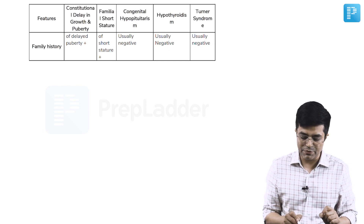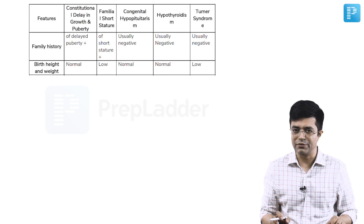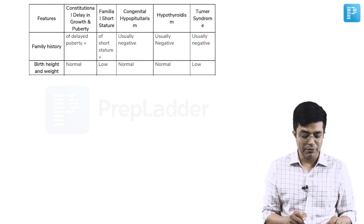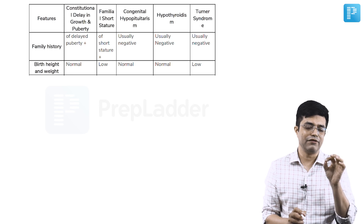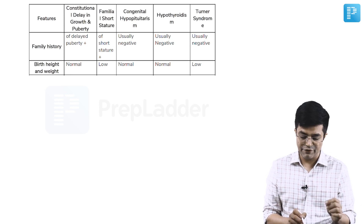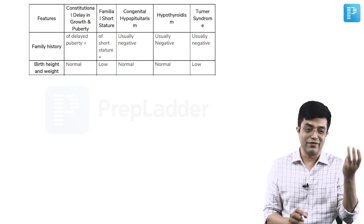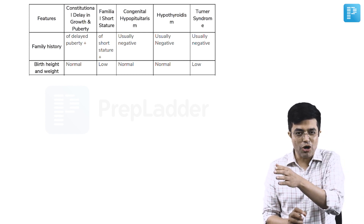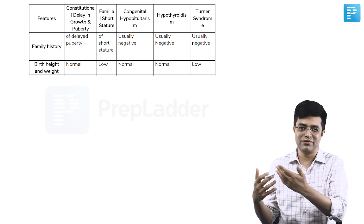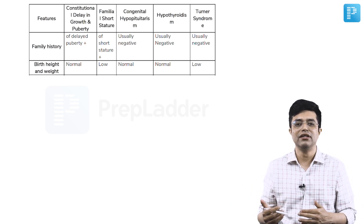In congenital hypopituitarism, hypothyroidism, and Turner syndrome, there will not be any positive family history. Regarding birth height and weight: it will be normal in constitutional delay in growth — these babies have normal birth weight and normal birth length. Whereas in familial short-stature, they are short and lighter in size; they remain short, and they are always below the third centile.